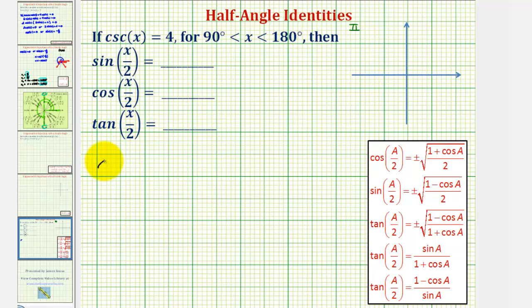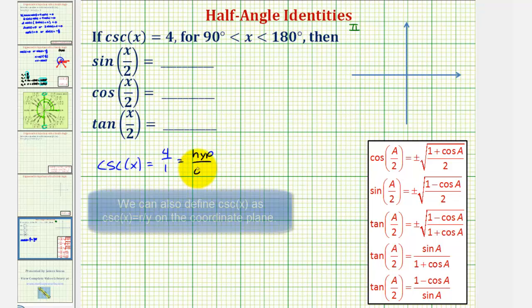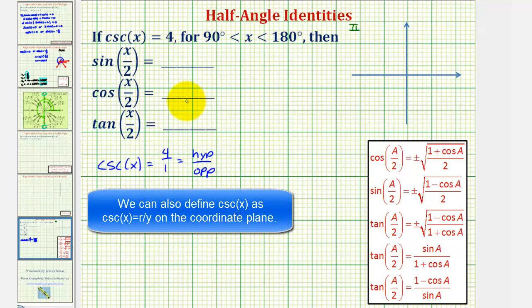Well, if we know cosecant x equals four, or four over one, since cosecant is the reciprocal of sine, this would give us the ratio of the hypotenuse to the opposite side of our reference triangle.